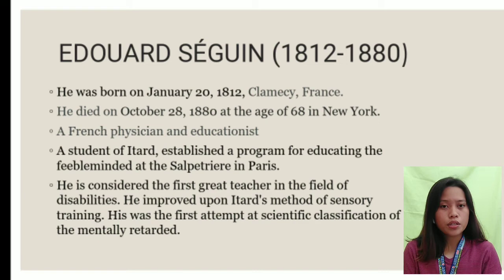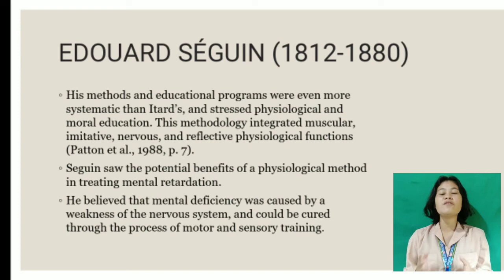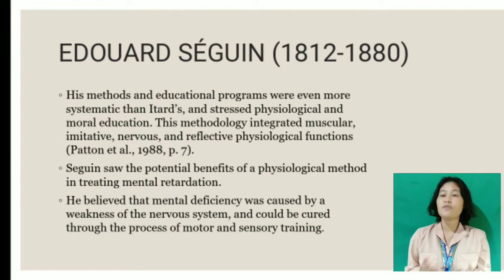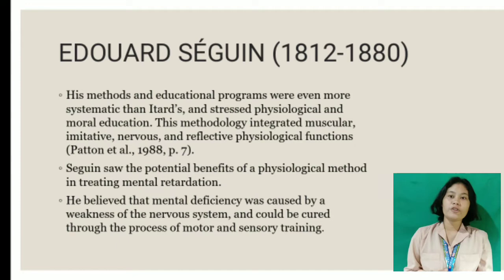He improved upon Edward's method. He was the first to attempt a scientific classification of the mentally retarded. Siegwin's methods and educational programs were even more systematic than Edward's. He saw the potential benefits of a physiological method in treating mental retardations. Siegwin believed that mental deficiency was caused by weakness of the nervous system and could be cured through motor and sensory training.